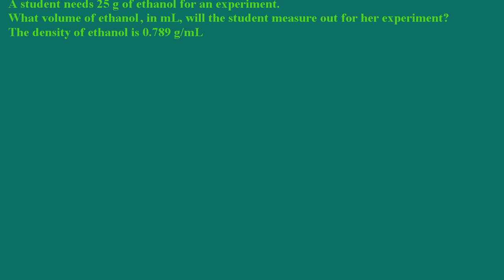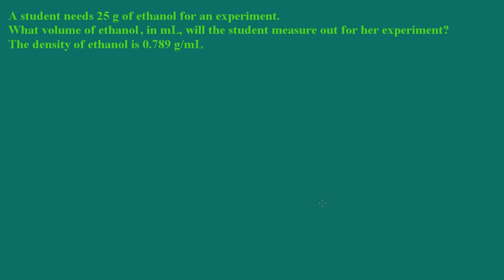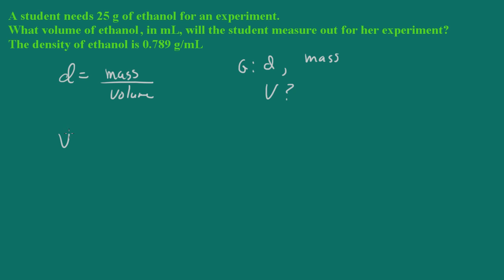Let's take a look at another problem. A student needs 25 grams of ethanol for an experiment. What volume of ethanol in milliliters will the student measure out? The density of ethanol is 0.78 grams per milliliter. Again, I'll write out the definition of density: mass over volume. Here we're given the density and the mass, so what we need is the volume. We'll solve for volume: volume equals mass divided by density.